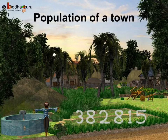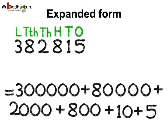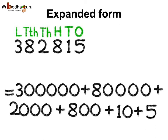The population of a town is three lakhs, eighty-two thousand, eight hundred and fifteen. Write the population in expanded form. 3,82,815 has three lakhs, eight ten thousands, two thousands, eight hundreds, one ten and five ones. That is 3,00,000 plus 80,000 plus 2,000 plus 800 plus 10 plus 5.